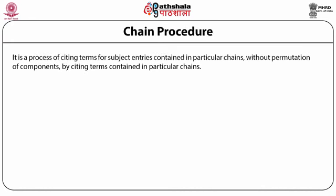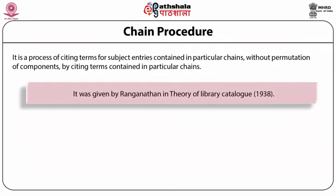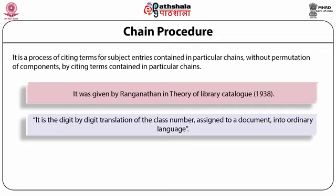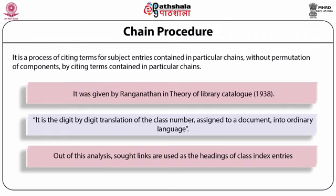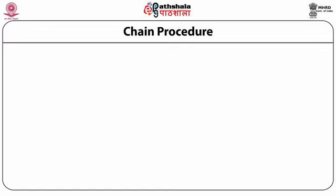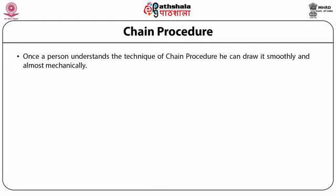Chain procedure — definition. The unique concept of chain procedure was first expounded by Dr. Ranganathan, a staunch supporter of subject approach, in his book Theory of Library Catalog in 1938. It is the digit by digit translation of the class number assigned to a document into ordinary language. Each class number is analyzed as a series of links — steps of division from the main class to the specific subject. Short links are used as the headings of class index entries beginning from the last step. Ranganathan defined it as a procedure for deriving subject word entries from a class number in a more or less mechanical way. Once a person understands the technique, he can draw it smoothly and almost mechanically.